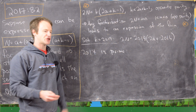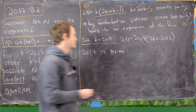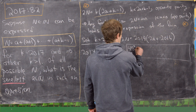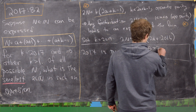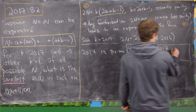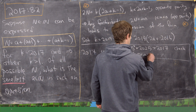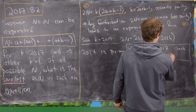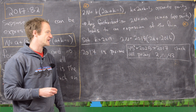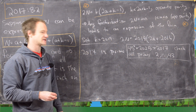Now let's notice that 2017 is prime. How would you check that on the exam? You'd notice that 45 squared equals 2025, which is bigger than 2017, and then check all primes from 2 to 43 — the largest prime below 45. You can show that none of those primes divide 2017, which makes 2017 prime.